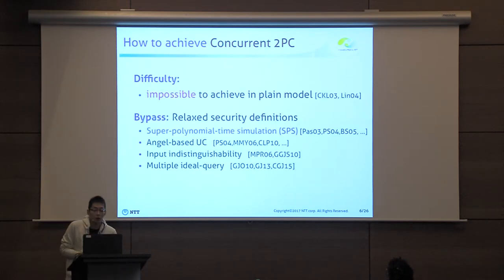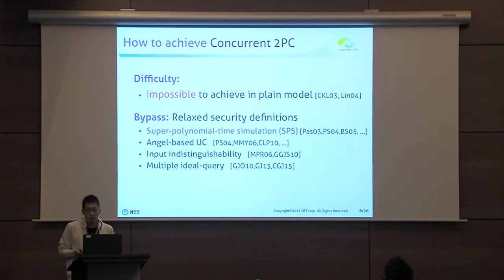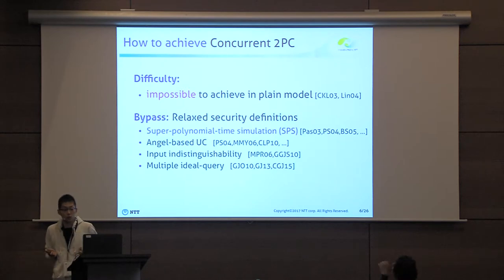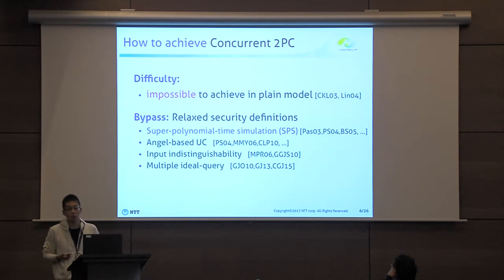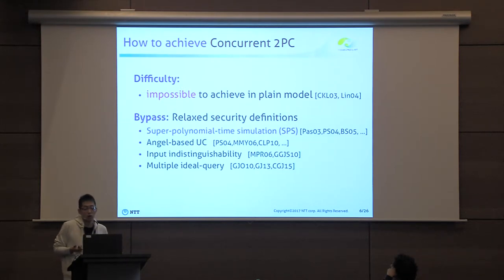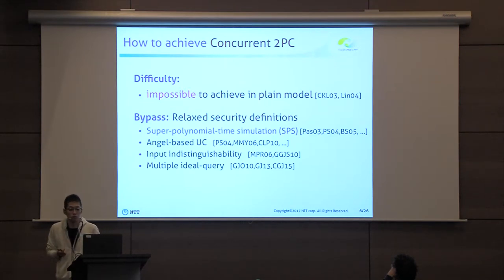However, a drawback of concurrent security is that it is hard to obtain. In fact, in the case of secure two-party computation, it is known that achieving concurrent security in the plain model is impossible. This means that if we don't have any trusted setup, such as a common reference string, then we cannot construct concurrently secure two-party computation.